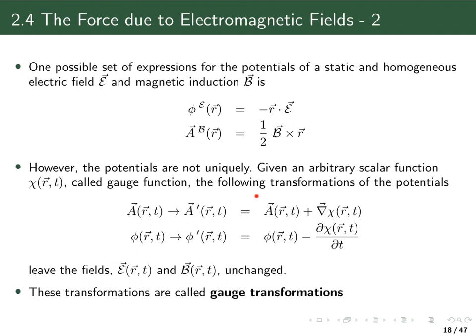This means that this definition or this expression for the potential is as good as the one without adding these contributions from the scalar gauge function. These transformations are called gauge transformations and we will come back to that in particular in the case of magnetic properties in later chapters, because these lead to some problems which we have to take care of in our derivation of quantum mechanical expressions for magnetic properties.